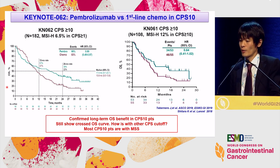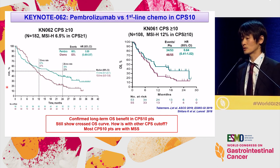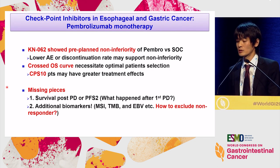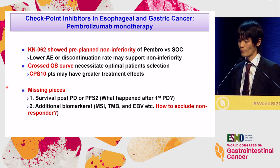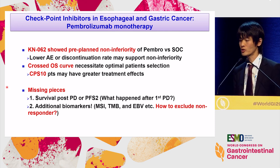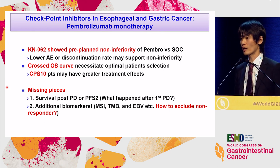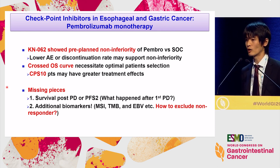MSI-high results were not yet available, but it was only 6.5% in the CPS1 population. In Keynote 61, MSI-high was only 12% in the CPS10 patient population. So most of the CPS10 patient population are microsatellite stable. Keynote 62 confirmed the pre-planned non-inferiority in overall survival but showed a crossing survival curve. There is some missing information: first, survival post-progression or PFS2; second, additional biomarkers. CPS10 is an important factor, but still not perfect.